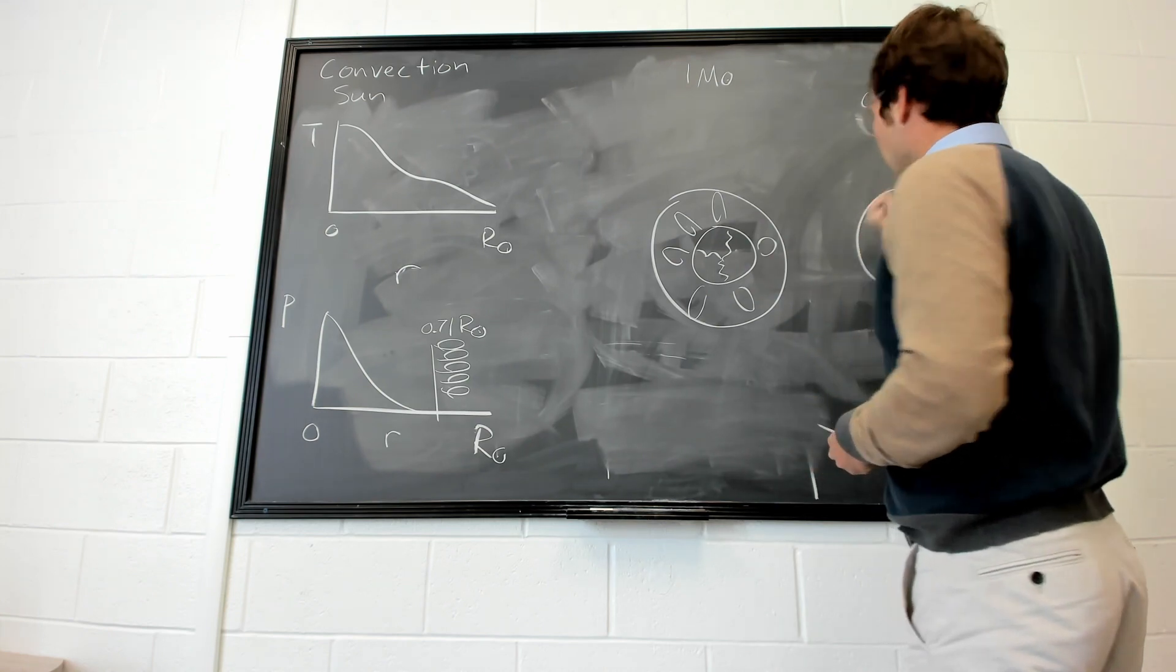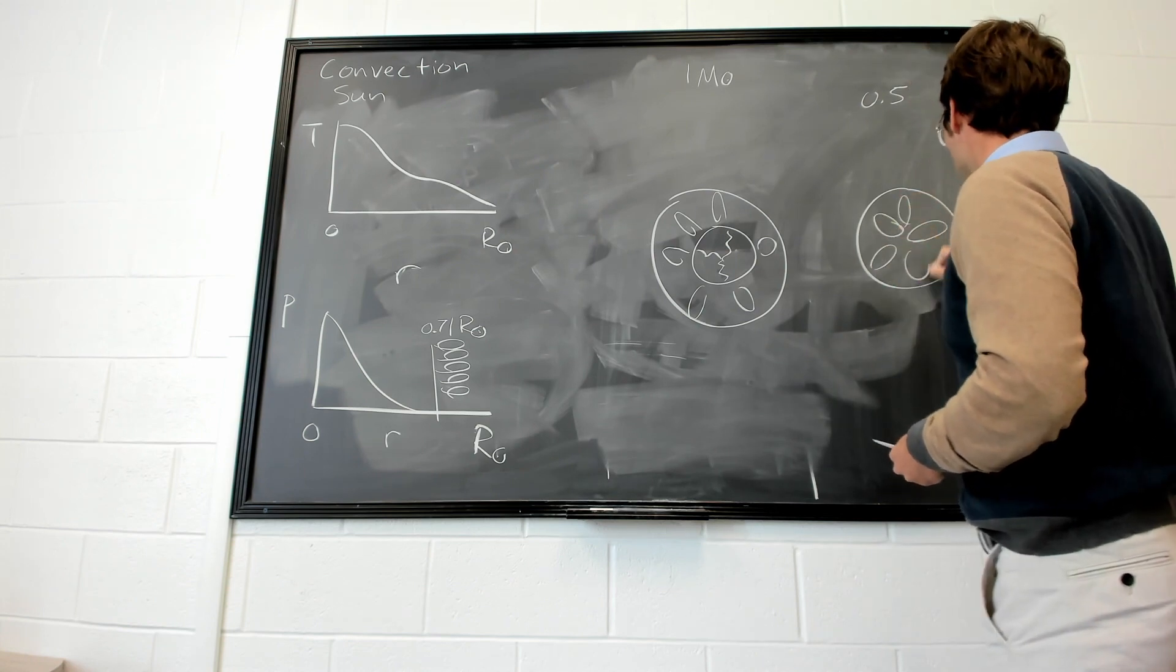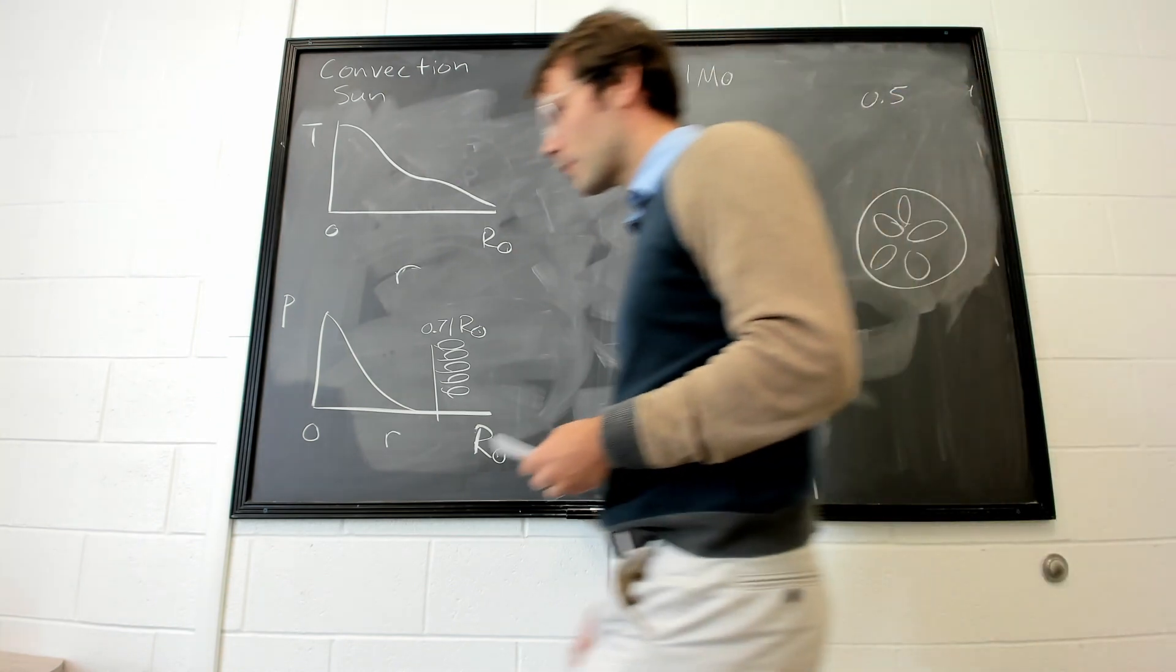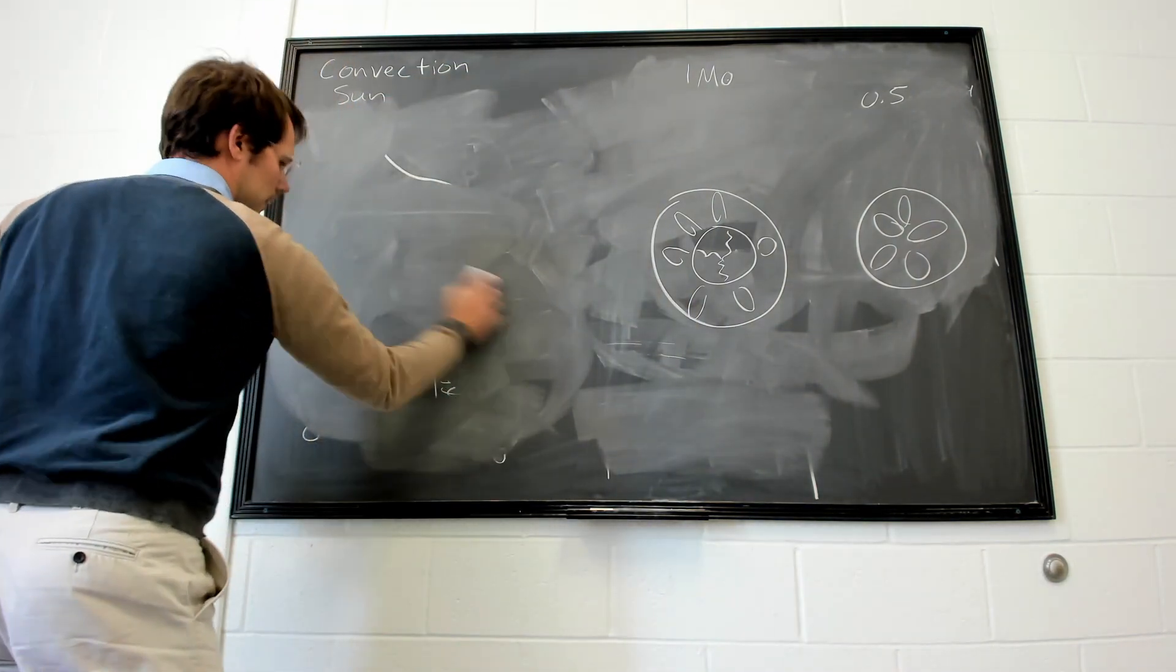For a low mass star, it might actually be entirely convective. There might be no radiative zone in a low mass star. Whereas for a very high mass star, something that is, let's say, greater than 1.5 times the mass of the sun.